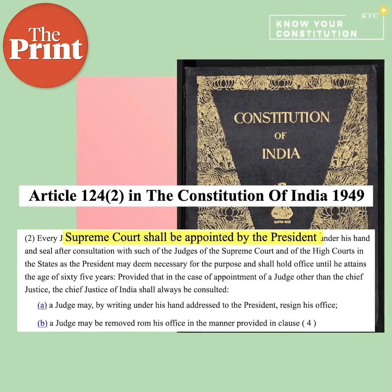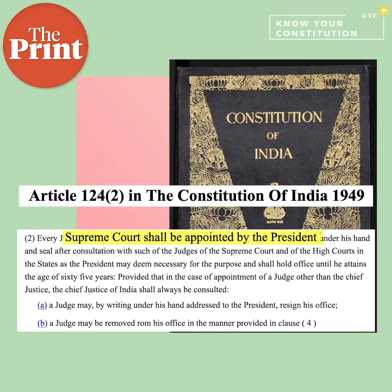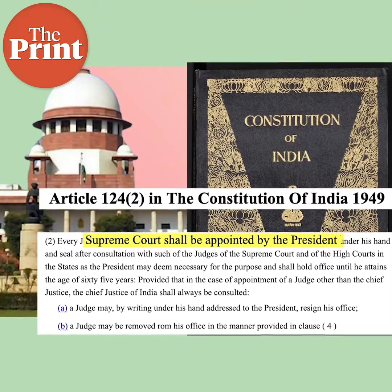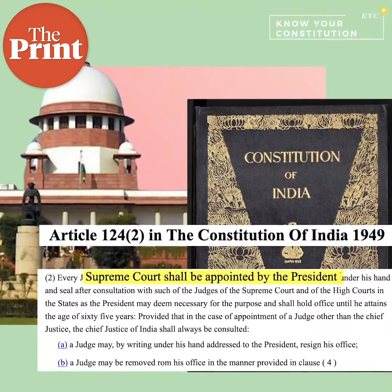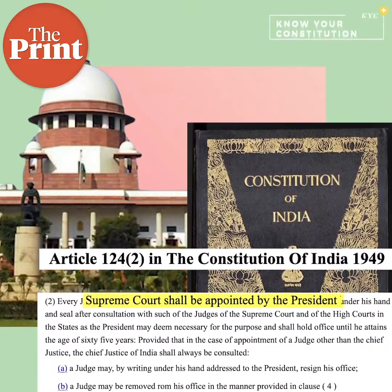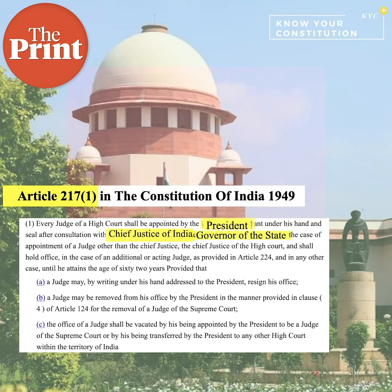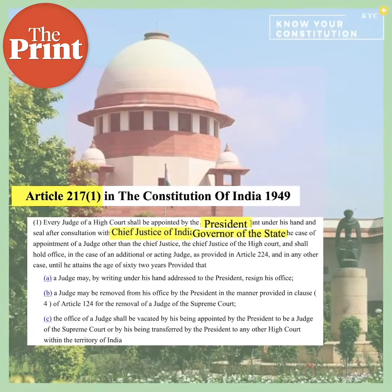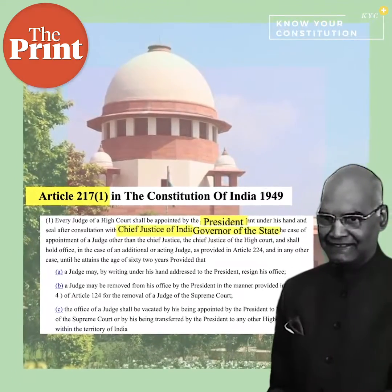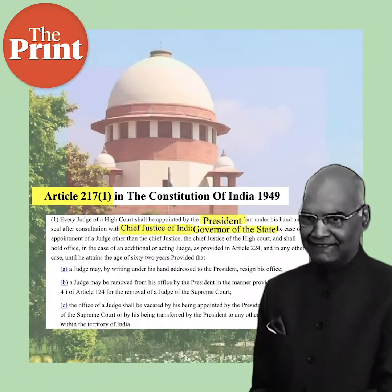We also told you about the constitutional provisions on appointment of Supreme Court and High Court judges and about the three judges' cases that have interpreted these constitutional provisions. Article 124 subclause 2 talks about the appointment of Supreme Court judges and requires the President to hold consultations with Supreme Court and High Court judges for this purpose. High Court Chief Justices are appointed under Article 217 subclause 1 by the President after consultation with the Chief Justice and the Governor of the State. The President also holds consultations with the High Court Chief Justice for appointment of High Court judges.